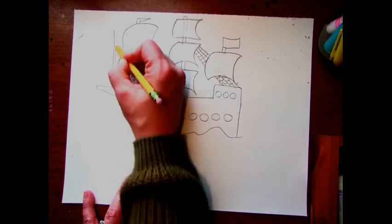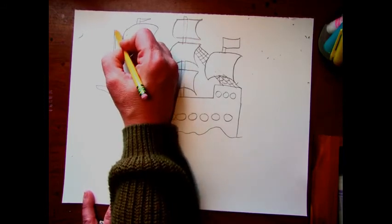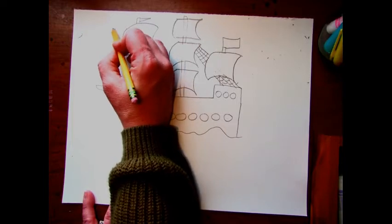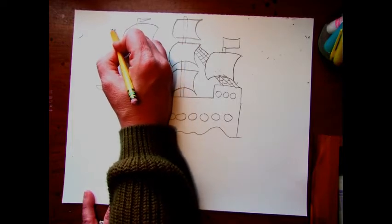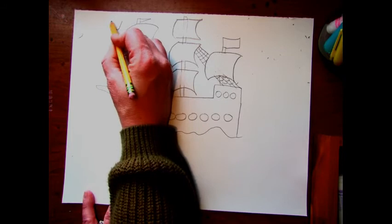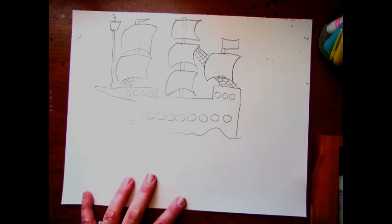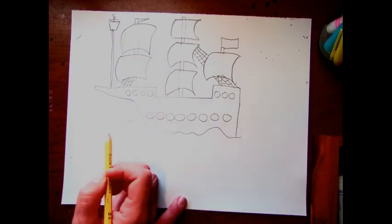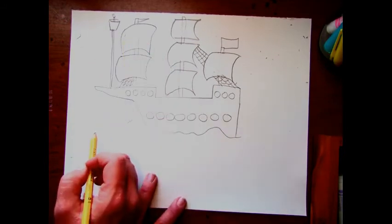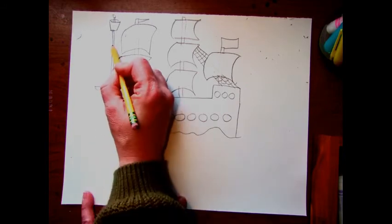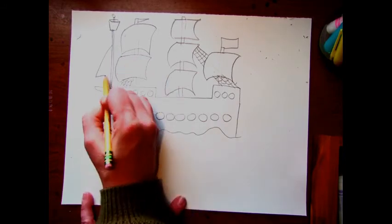Let's make one more special sail in the front. So I'll start with another pole. Maybe I'll add a little lookout basket for somebody. And then just a little triangle here for a sail.